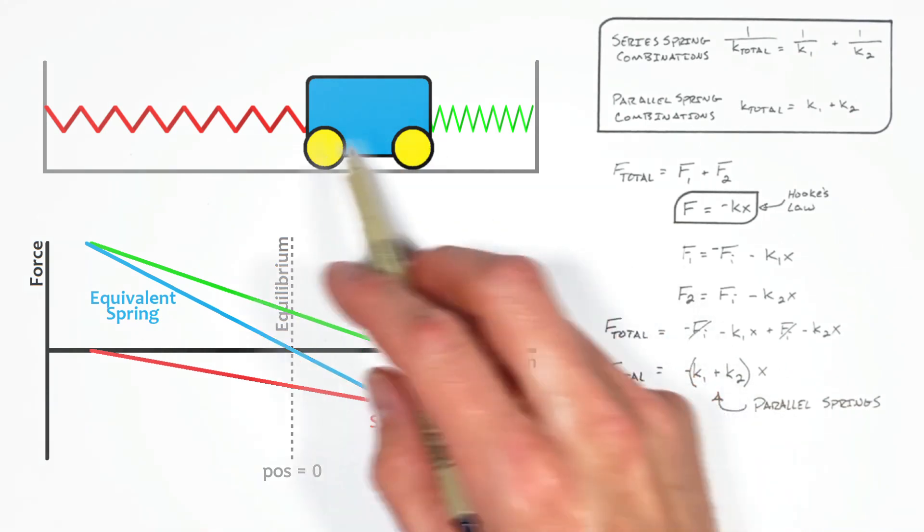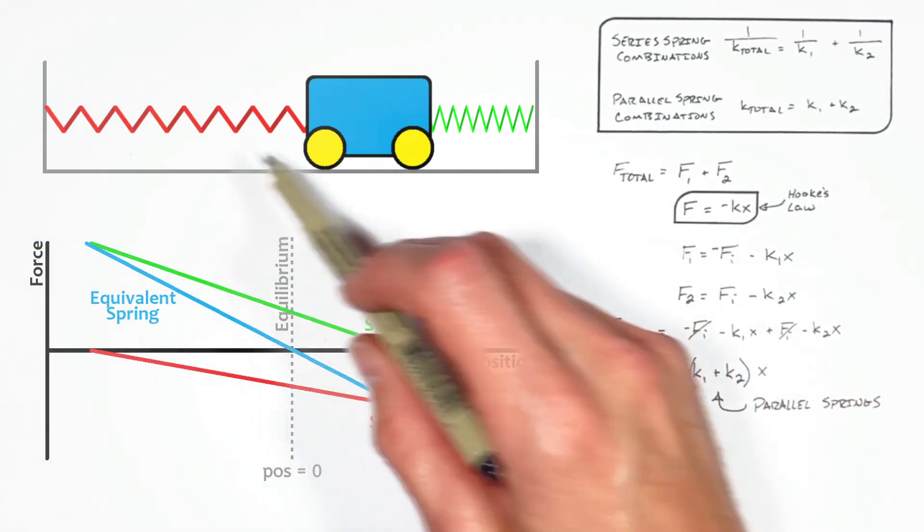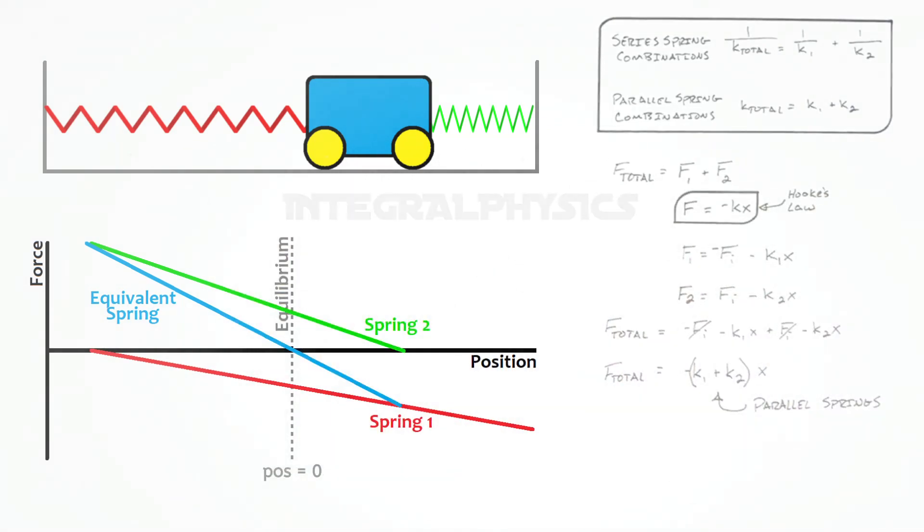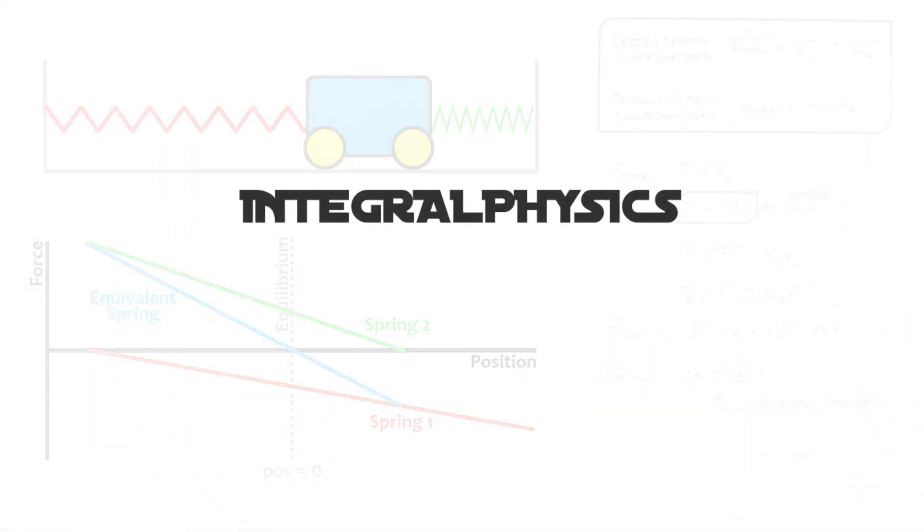So there it is, a proof that these two springs are in fact in parallel, not in series, even though they appear to be in a line with one another. So I hope you found this useful, and on that note, that's all for now.